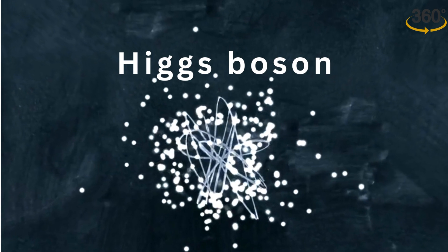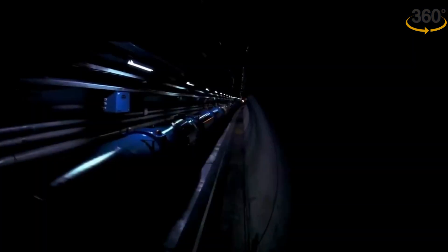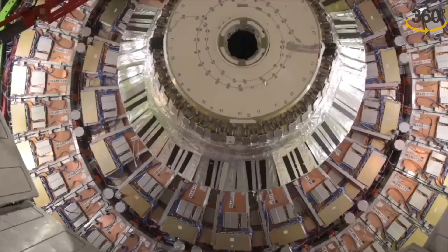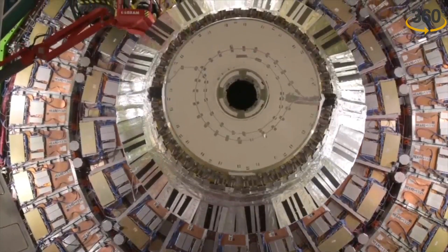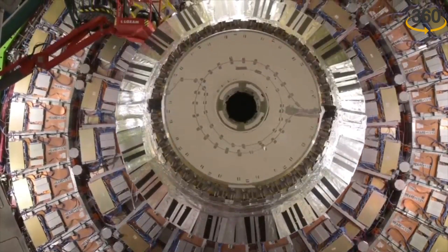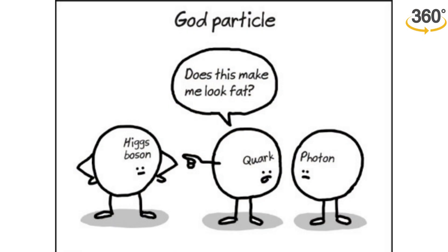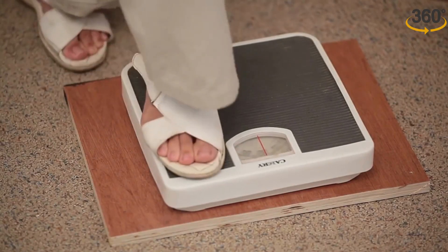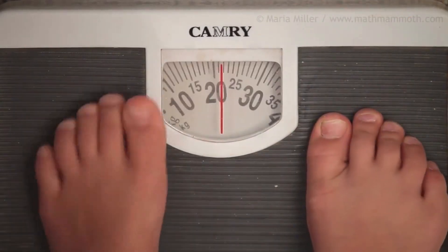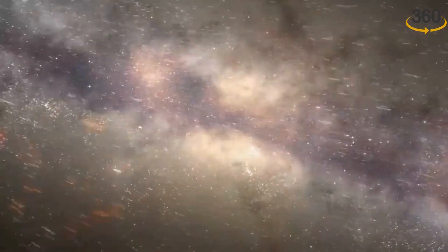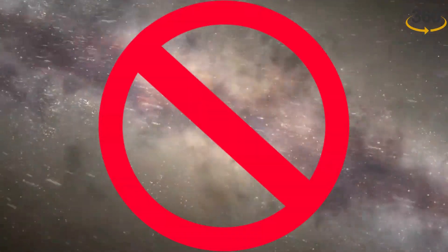It is also known as the Higgs boson. It was discovered in 2012 at the Large Hadron Collider in Switzerland. The Higgs boson is a subatomic particle that explains how other particles in the universe acquire mass. It is also responsible for why some particles are heavy and some are light. Without the Higgs boson, particles would move at the speed of light and matter as we know it wouldn't exist.